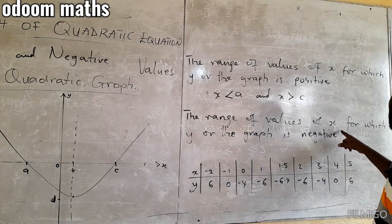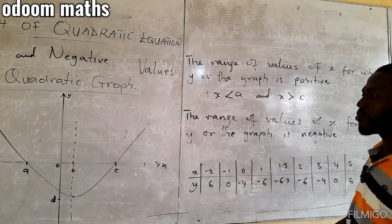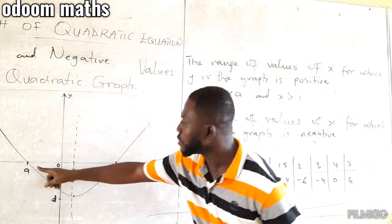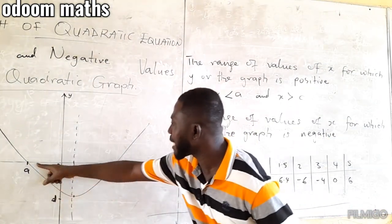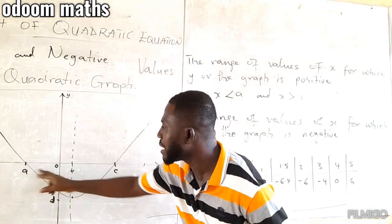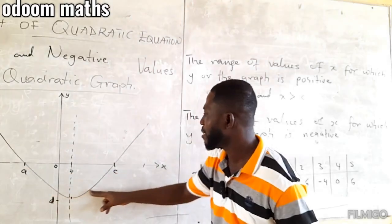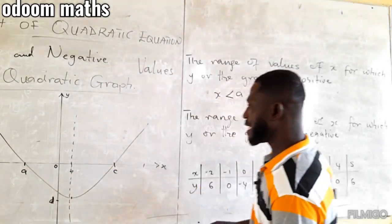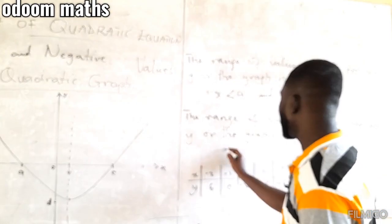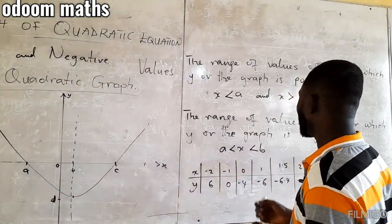Then the range of values of x for which y or the graph is negative. In that sense, those below the y and below the x-axis start from a to c. They are not fat. Between a and c, those values make y to be negative. So, we say that a less than x less than c.